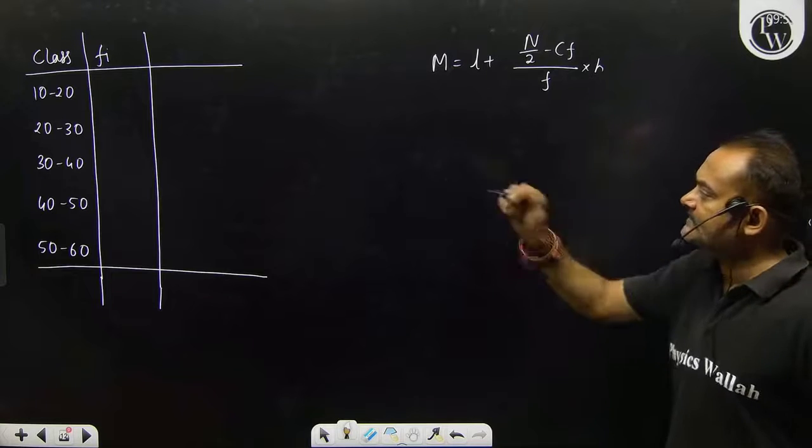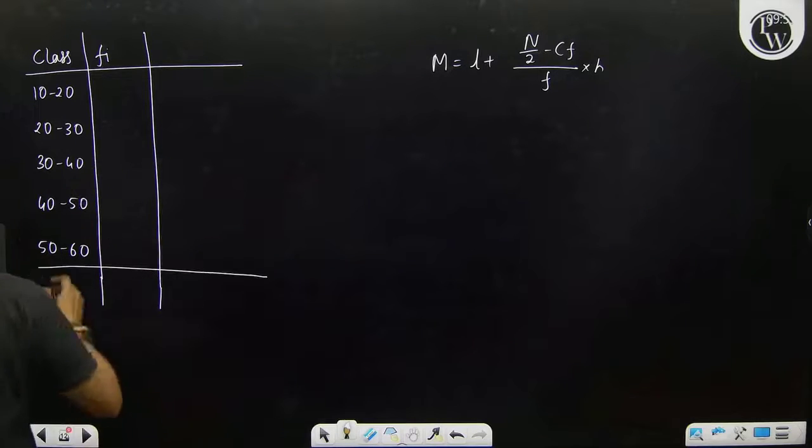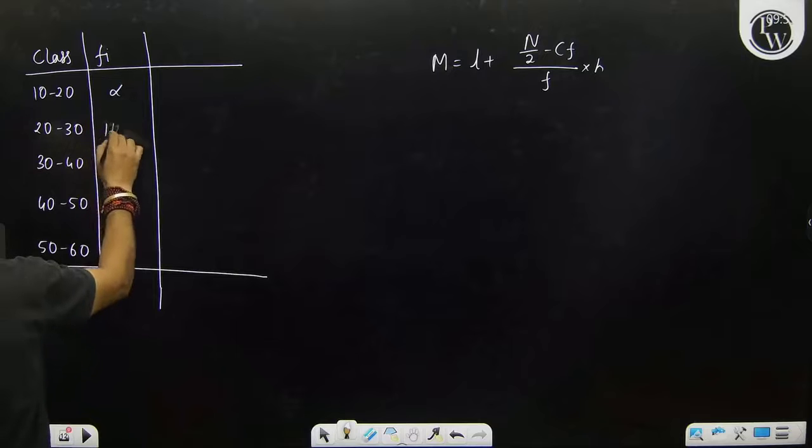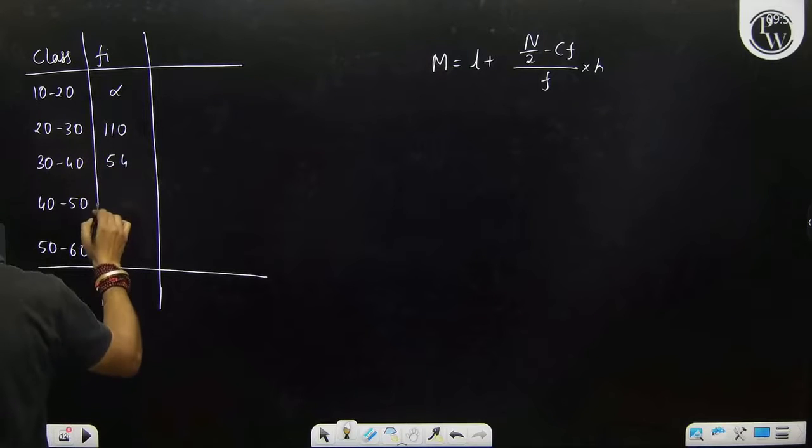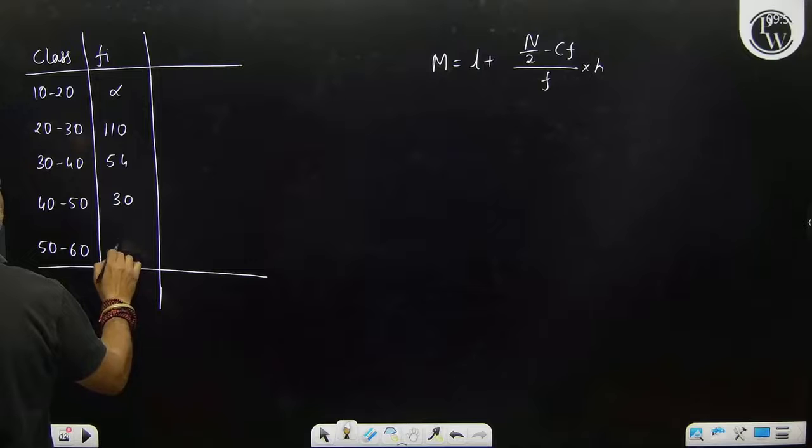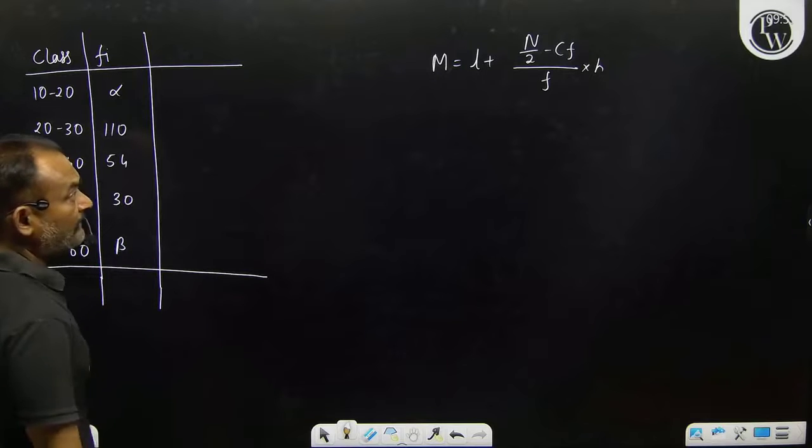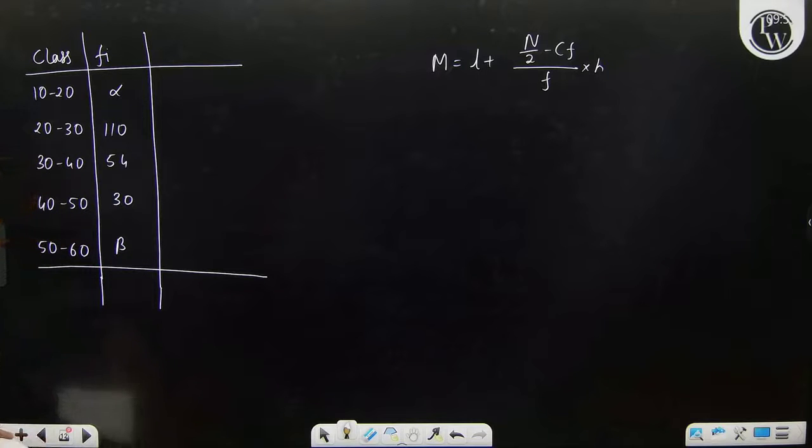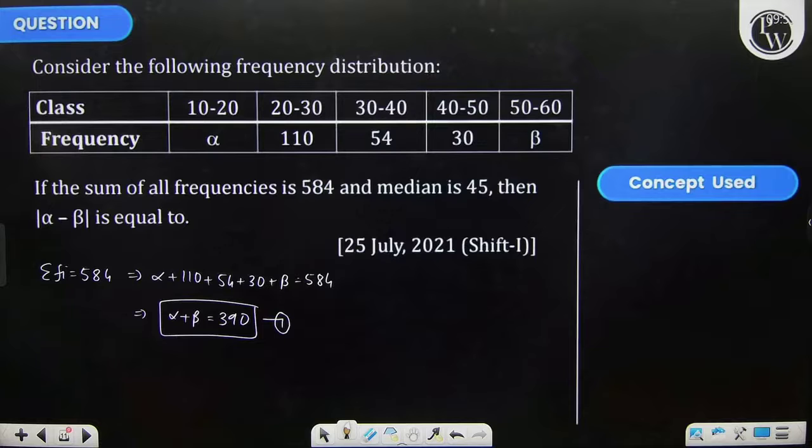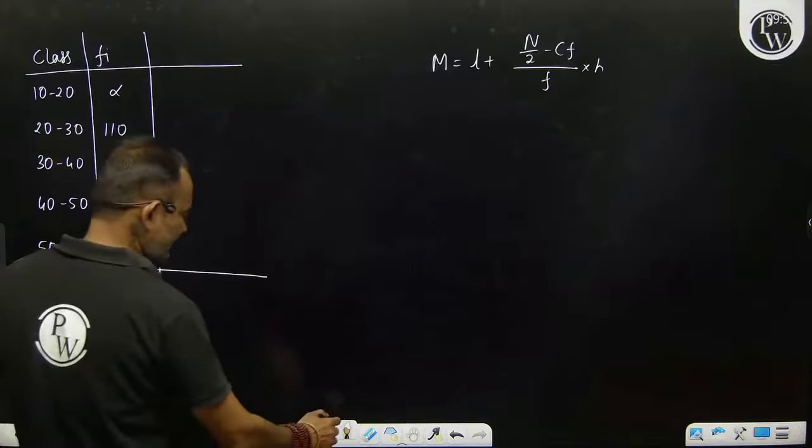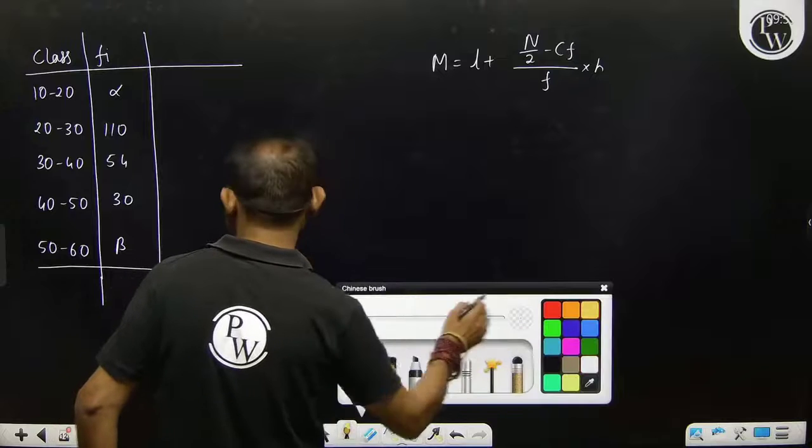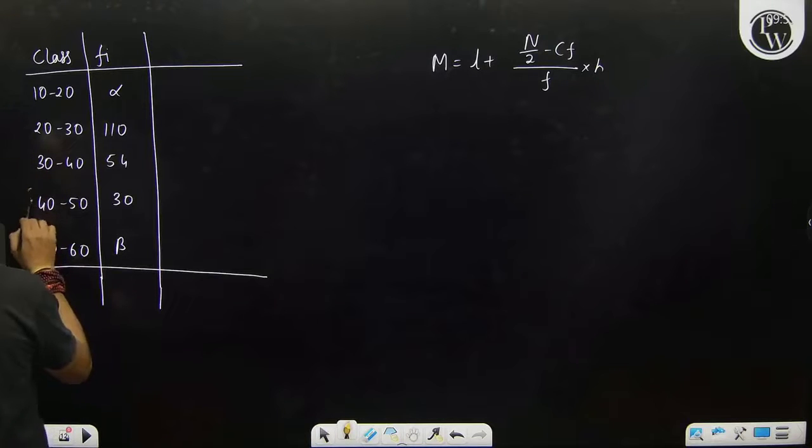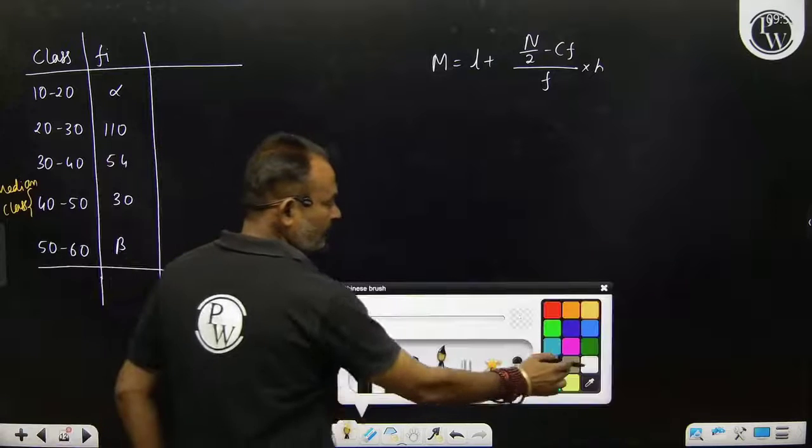Now what is given: frequencies alpha, 110, 54, 30, beta. Median is 45, then obviously this is the median class. Find cumulative frequency.